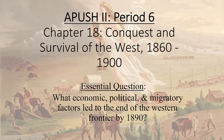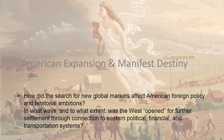Chapter 18 is an introduction to the unit. We're talking about American expansion and Manifest Destiny — how the search for new global markets affected foreign policy and territorial ambitions. Foreign policy we'll address more when we talk about imperialism. Today we're focusing on territorial ambitions, and in what ways the West was open for further settlement through connection to Eastern political, financial, and transportation systems.